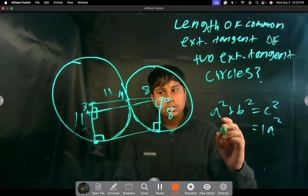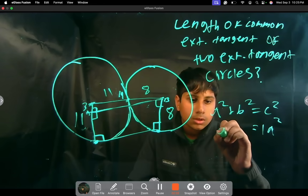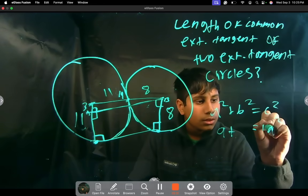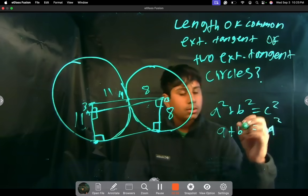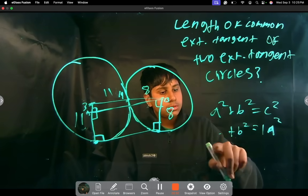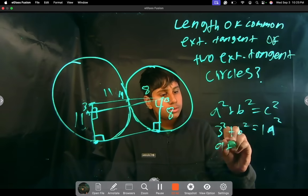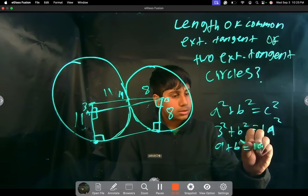A squared plus B squared is equal to C squared. So 19 squared is equal to, let's say A is 3, so 9 plus B squared. So 9 plus B squared is equal to 19 squared.